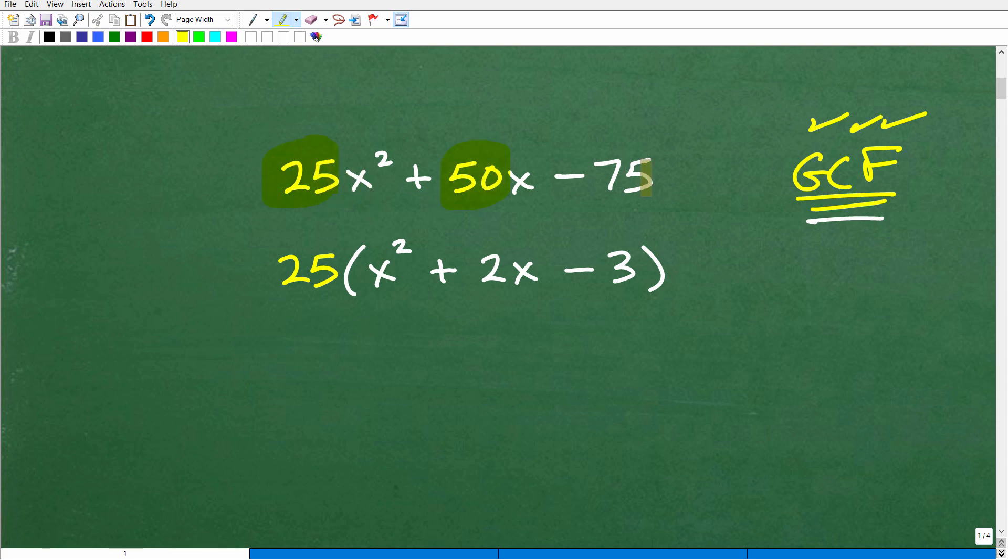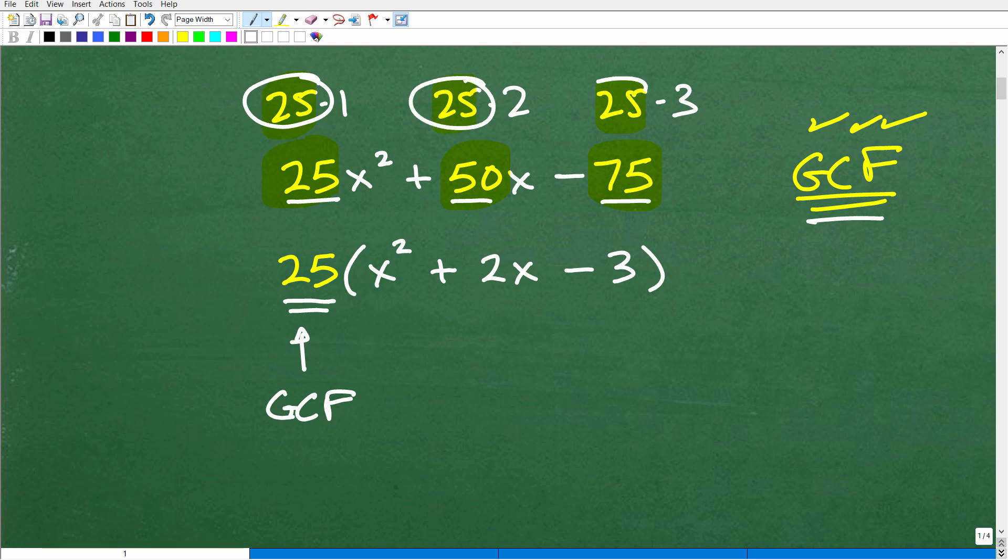But the greatest common factor, you always look to see if there is a greatest common factor amongst the coefficients or the terms of any trinomial or anything you're trying to factor in algebra. So here, looking at it, I have 25, 50, and 75. I can factor out a 25. The 25 is the greatest common factor.